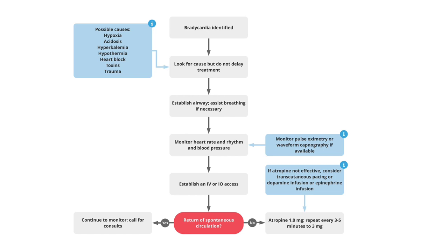In summary: if a patient has significant bradycardia, rule out 5 H's and 5 T's, treat with atropine, identify and treat the underlying cause, and if the patient is not responding or has heart blocks, proceed to temporary pacing — and permanent pacing if required. This concludes our discussion of bradycardia and its management in the emergency room.